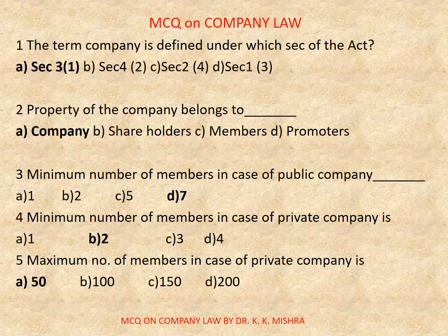Question number 3: Minimum number of members in case of a public company — Options are: A) 1, B) 2, C) 5, D) 7. Correct option is D, 7.